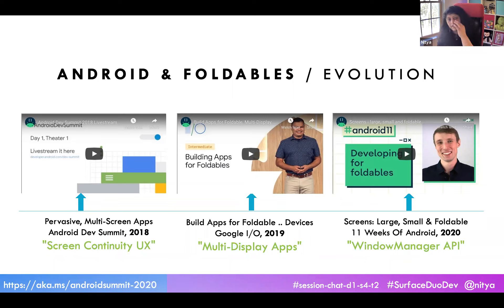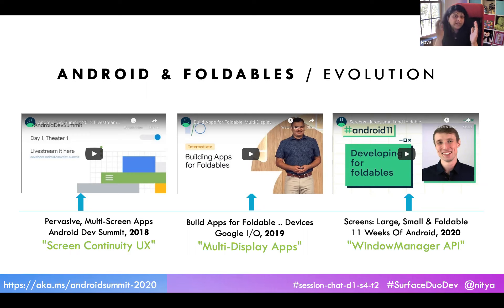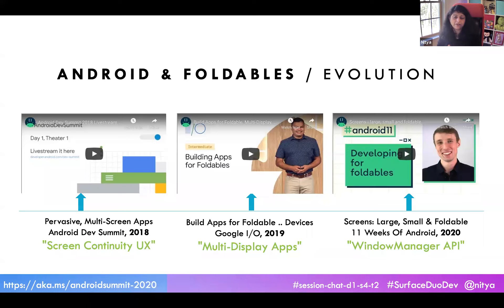In 2019, at Google I/O, we started seeing a really comprehensive set of guidances and features. The big takeaway was the move from multi-window — where only one activity was resumed at a time — to multi-display, where you have different screens on which you can launch activities simultaneously. Features like multi-resume emerged: how can I have activities starting on both screens? New lifecycle callbacks appeared, and we started seeing the need for design patterns.